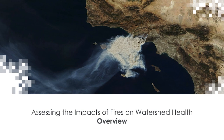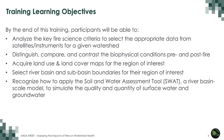The following slides provide an overview of the training. After participating in this three-part training, participants will be able to analyze the key fire science criteria to select the appropriate data from satellites and instruments for a given watershed. You'll be able to distinguish, compare, and contrast the biophysical conditions pre- and post-fire. You'll be able to acquire land use and land cover maps for the region of interest, select river basin and sub-basin boundaries, and recognize how to apply the Soil and Water Assessment Tool, a river basin scale model, to simulate the quality and quantity of surface water and groundwater.